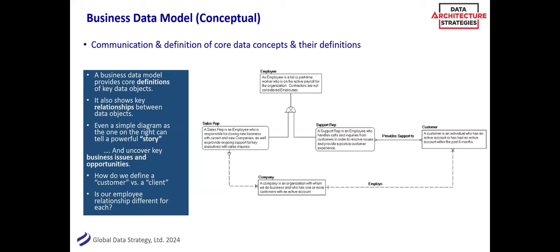A picture is worth a thousand words. Here's an example of a data model at the conceptual level. This particular tool shows definitions, so it's almost like a glossary on steroids, which is nice. Most people, even without knowing what a data model is, can engage with it quickly once you explain a few notations — the crow's foot means 'many,' the zero means 'optional.' You might look at a definition like 'an employee is a full or part-time worker on the active payroll' and someone says, 'Wait, we don't consider a part-time person an employee — they'd be something else.' So you start to discuss it. There are different types of employees, different types of customers — someone might say, 'What do you mean customers? Isn't that a client? Is a client different from a customer?'